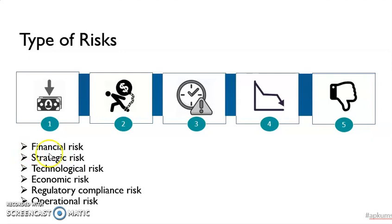Second is strategic risk, meaning our strategy might not be the best due to the current situation. Third is technological risk — the change in technology costs that can affect our product. Fourth is economic risk, such as what is happening now: when the economy drops, we might face deflation, which affects customers' ability to buy goods and services from us.